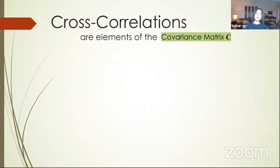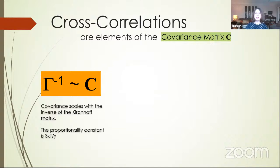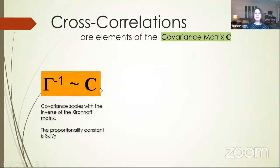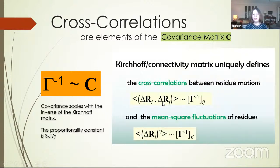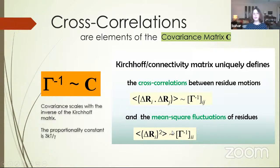Using this very simple theory, the most important property we obtain are the cross-correlations, which are the elements of the covariance matrix. Whenever you have a network, you want to understand how signals are propagated or how cooperative events take place between remote locations. The inverse of the connectivity matrix is proportional to the covariance matrix — the cross-correlation between the fluctuations of two nodes is found from the i,j element of the inverse of gamma, while mean square fluctuations are the diagonal elements.